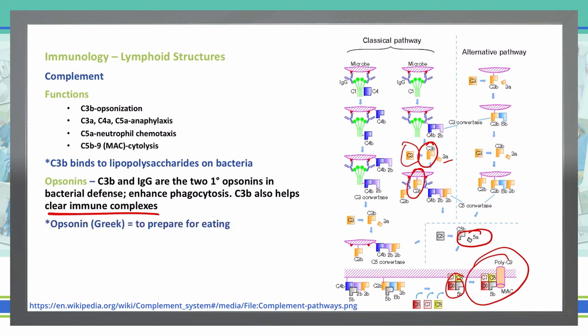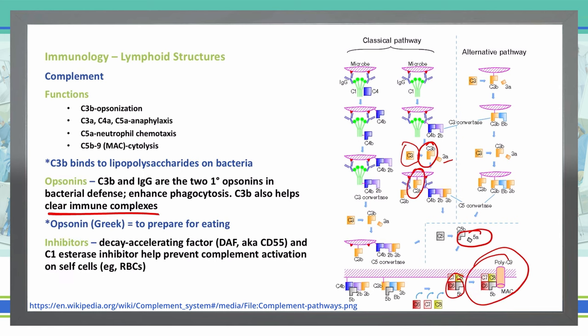Inhibitors such as decay accelerating factor — also known as CD55 — and C1 esterase inhibitor help prevent complement activation on self-cells. We don't want to activate complement on cells we want to keep, like red blood cells. We don't want phagocytes to notice complement has been activated on a red blood cell and eliminate it, because that's not the purpose.